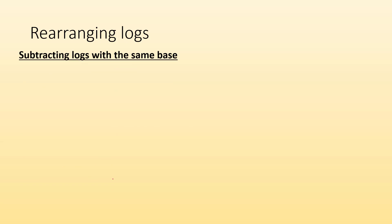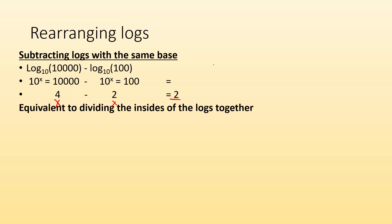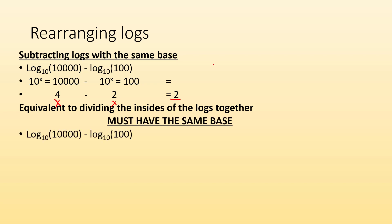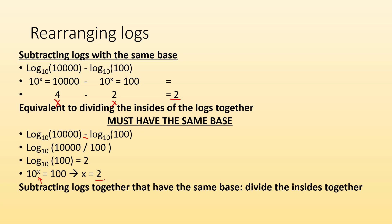With subtracting logs with the same base, if you add you multiply the insides together — so let's see what happens with subtracting. If I had log base 10 of 10,000 minus log base 10 of 100, 10 to some number gives me 10,000 minus 10 to some other number equals 100. X equals 4 and X equals 2, so 4 minus 2 gives me 2. It's equivalent to dividing the insides of the logs together. Log base 10 of 10,000 minus log base 10 of 100: divide the insides — 10,000 divided by 100 gives me 100. So log base 10 of 100 equals 2. The rule for subtracting logs is: divide the insides together.